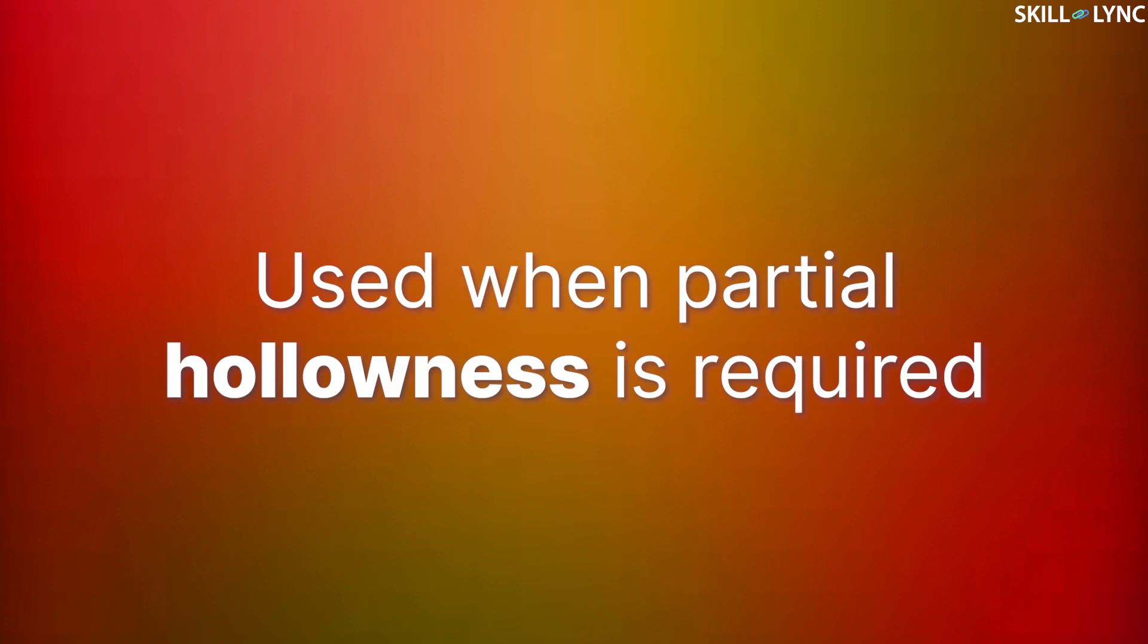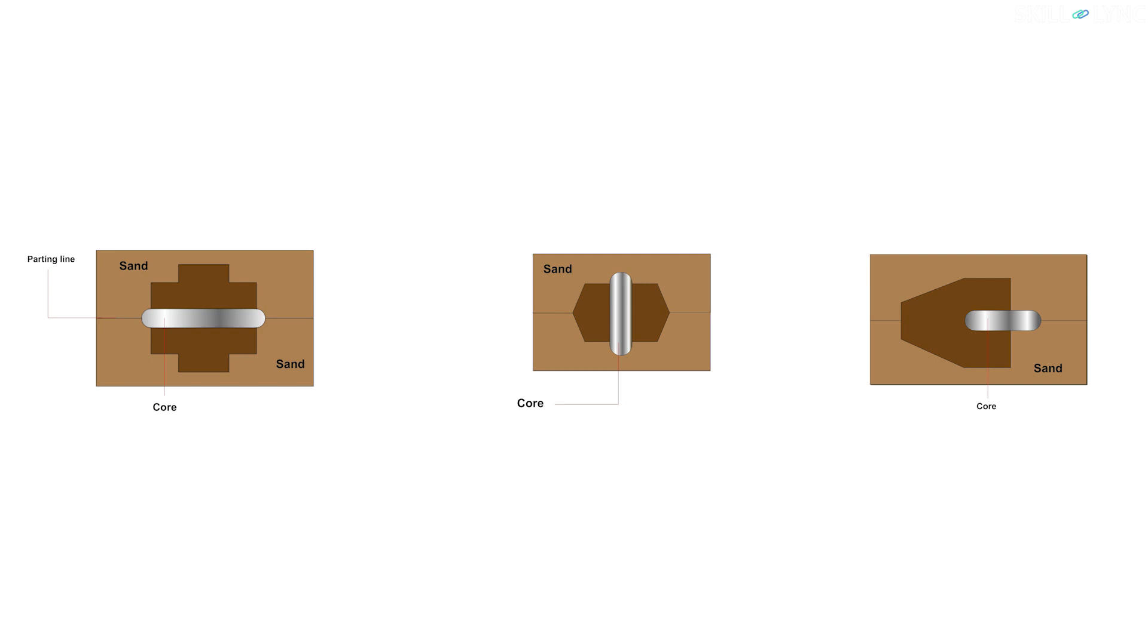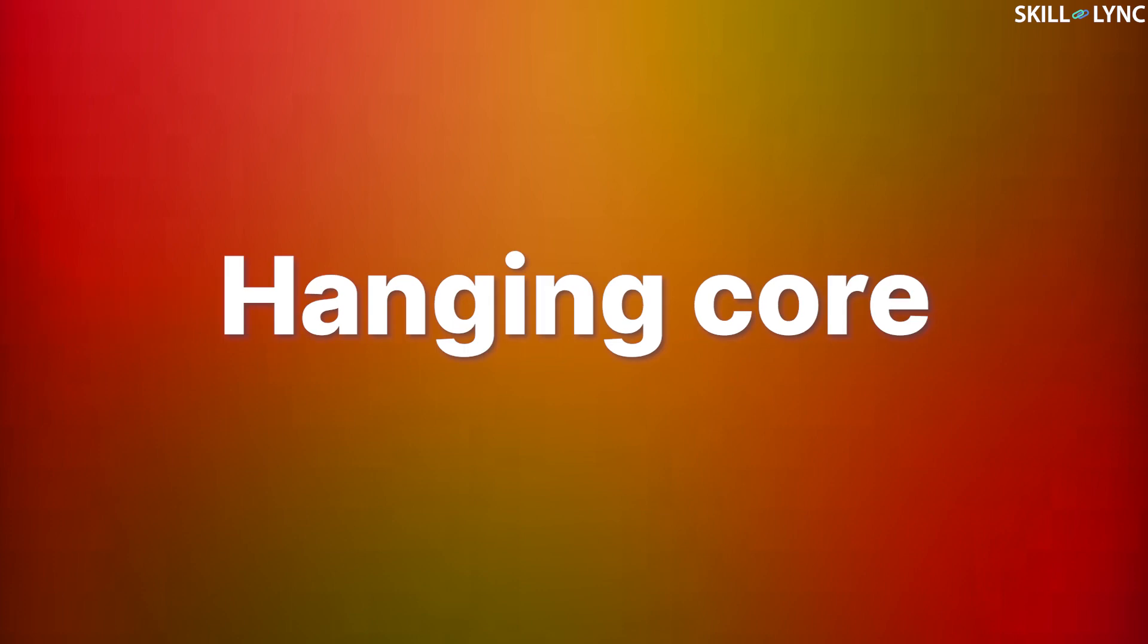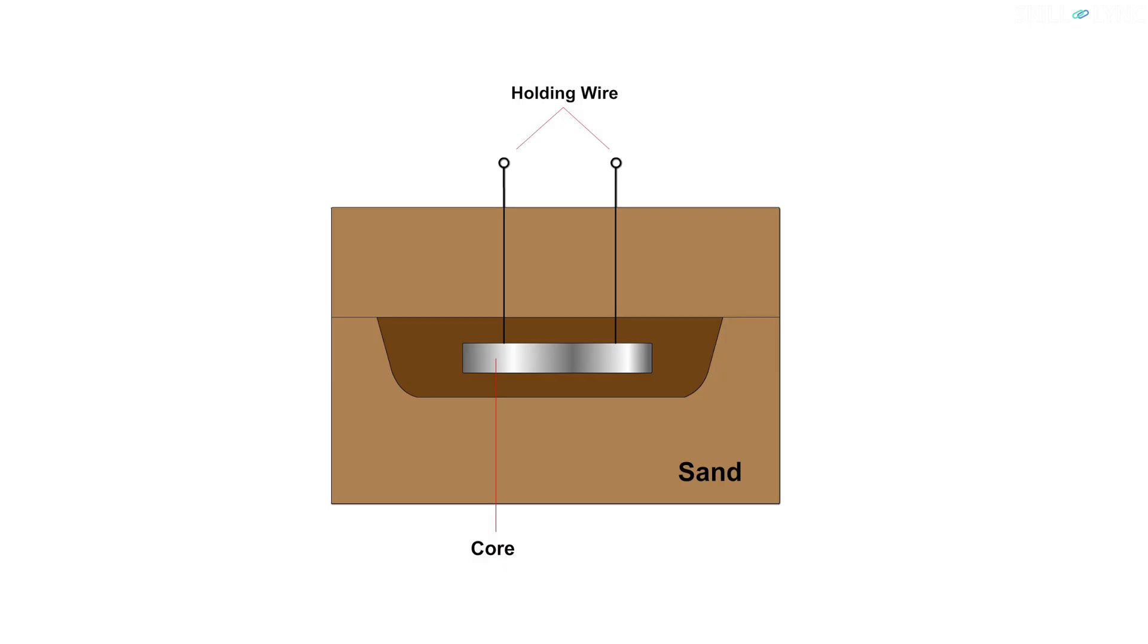Till now all the types of cores that we have talked about require core print or bottom supports. Now we will talk about cores which do not require core prints. The first such core that we will talk about is the hanging core. Hanging cores are those which are suspended vertically into the mold with the help of hanging wires. These cores do not require any support and can be made of either green or dry sand.